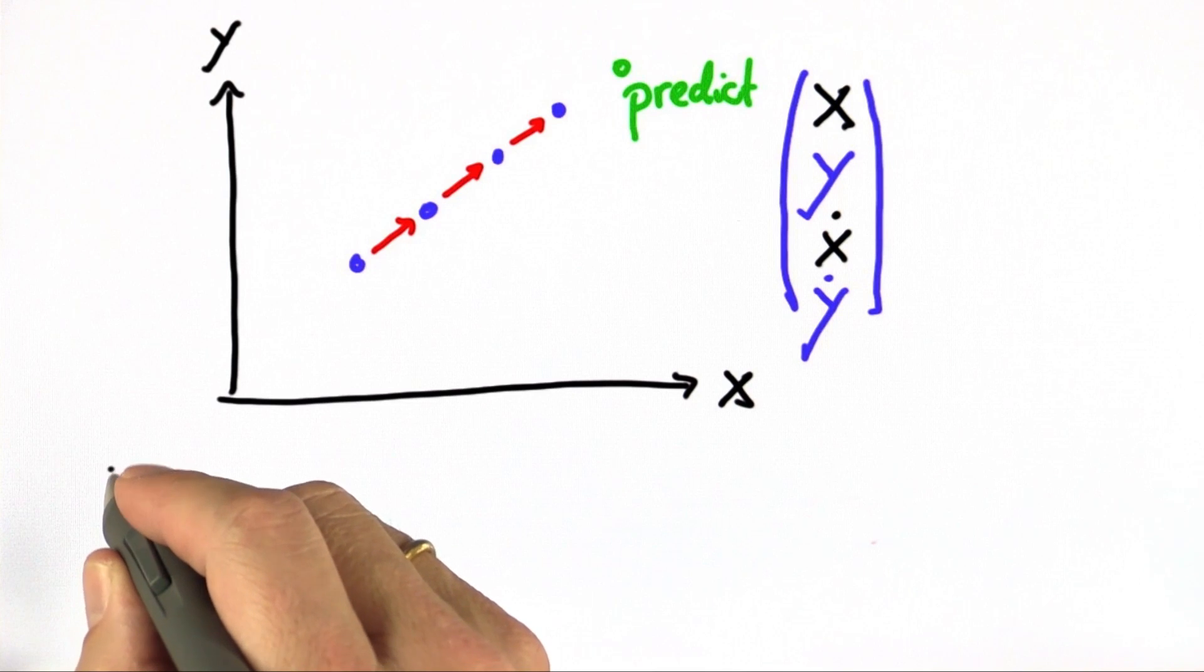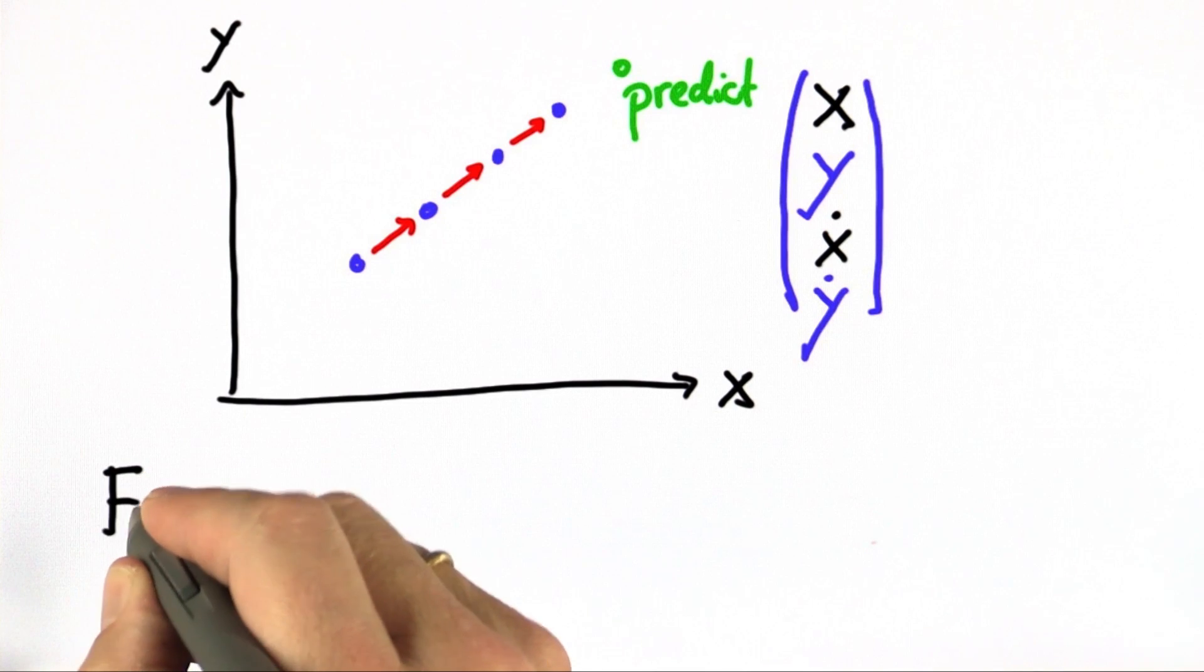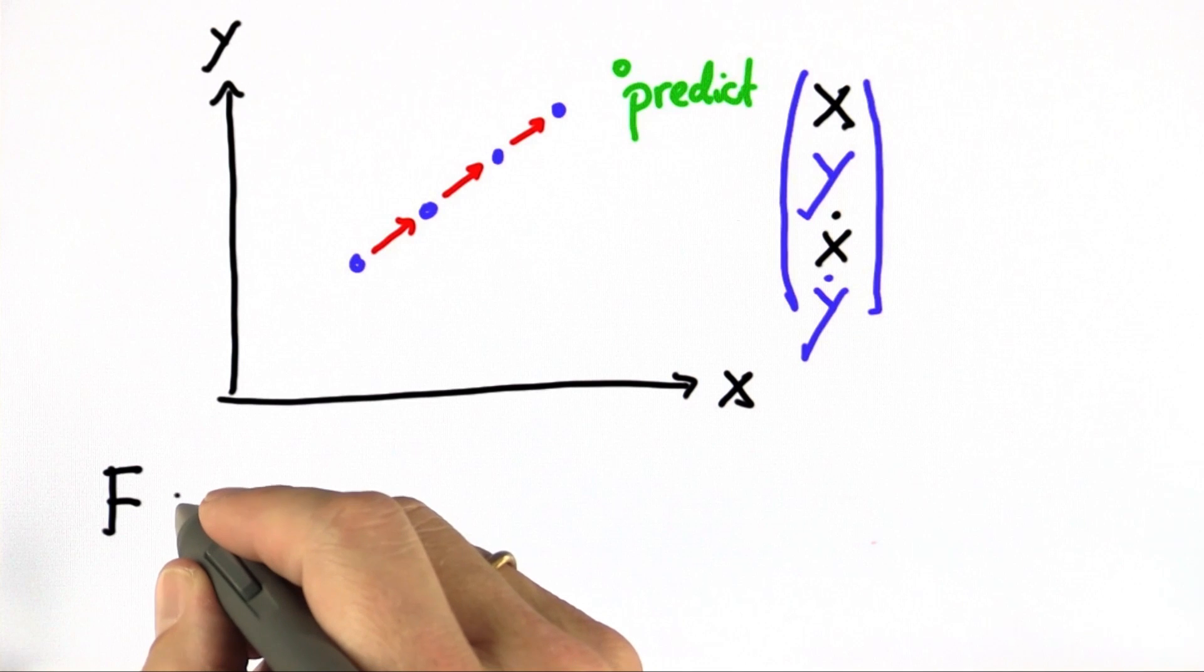Now comes the tricky question. In the Kalman filter program that we studied, the 2D Kalman filter, we had a matrix F.